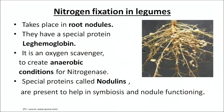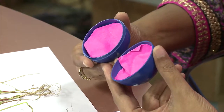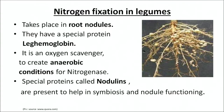Nitrogen fixation in legumes takes place in root nodules, which have a special protein — leghemoglobin — the pink pigment visible when root nodules are cut open. Leghemoglobin is an oxygen scavenger, meaning it removes oxygen from the environment to create anaerobic conditions for nitrogenase. This is a limitation of nitrogenase: it can function only in anaerobic situations.